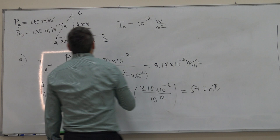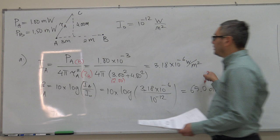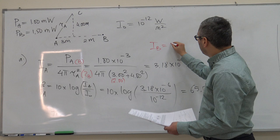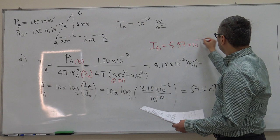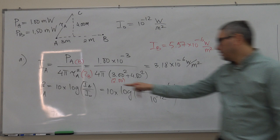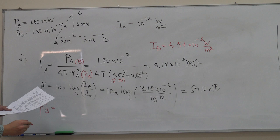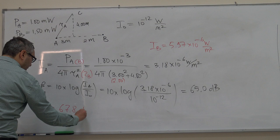So this number will change; instead of 3 we will have 2. Instead of this intensity, we're going to get a different intensity, which I will write here. It's exactly the same calculation, so 5.97 times 10 to minus 6 watt per meter squared. Once we know the intensity at point C created by source B, we can substitute it in this equation again and calculate beta_B. You just change I_A by I_B, and if you do that you will get 67.8 decibels.